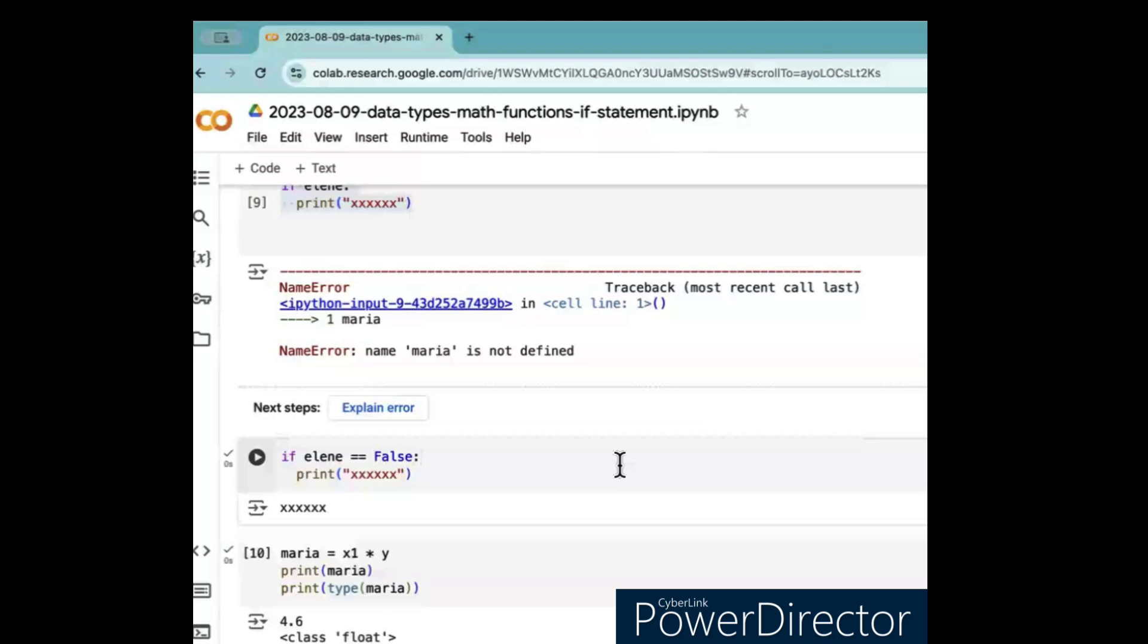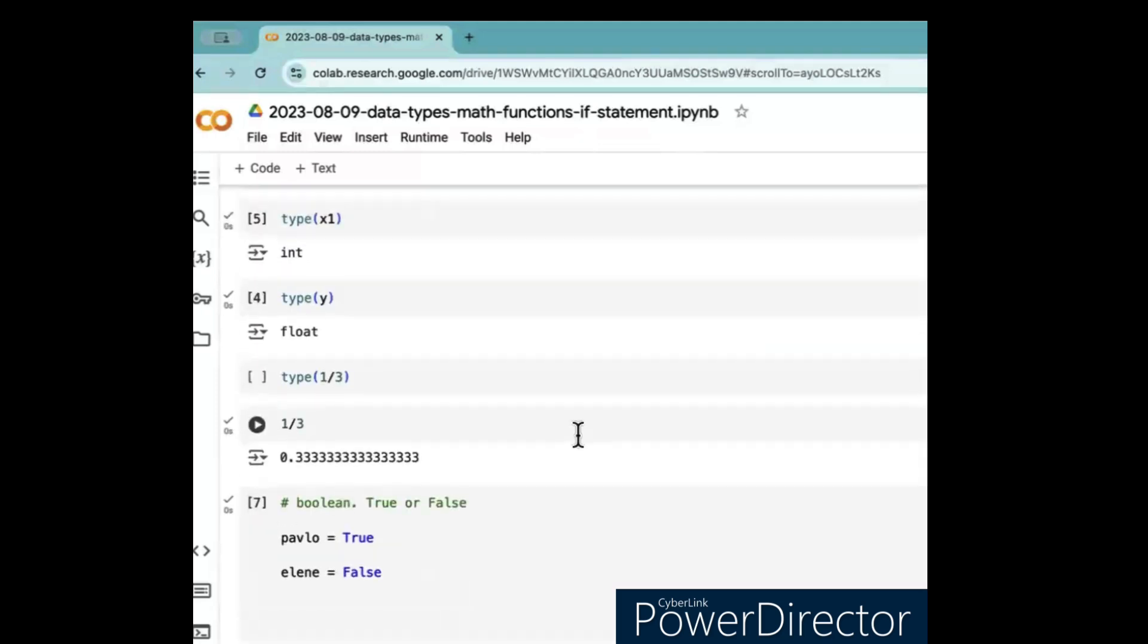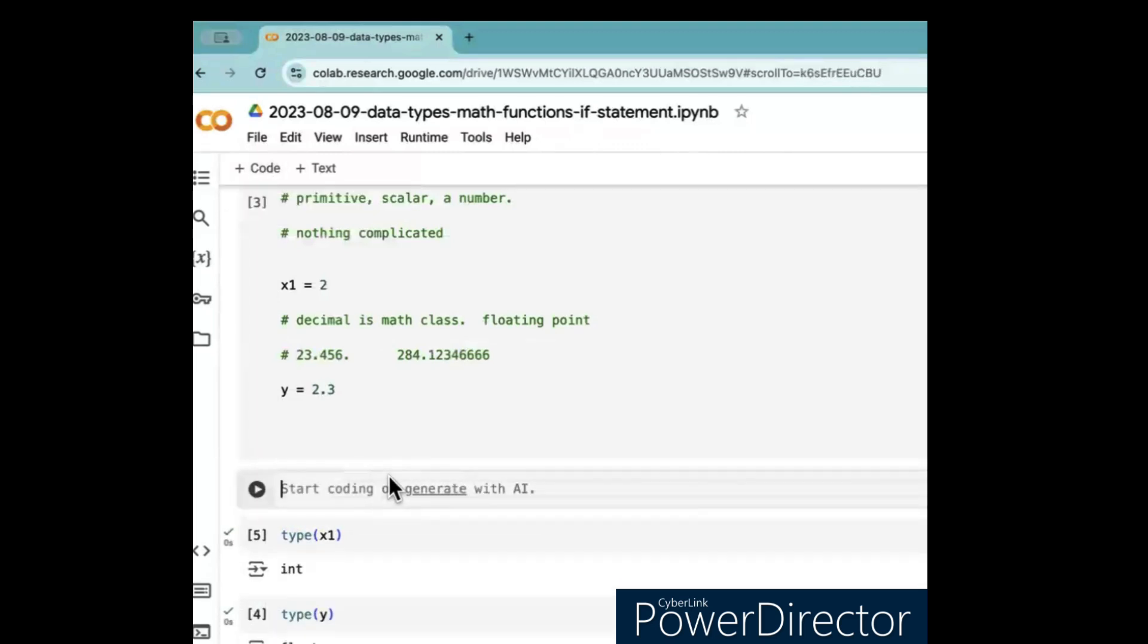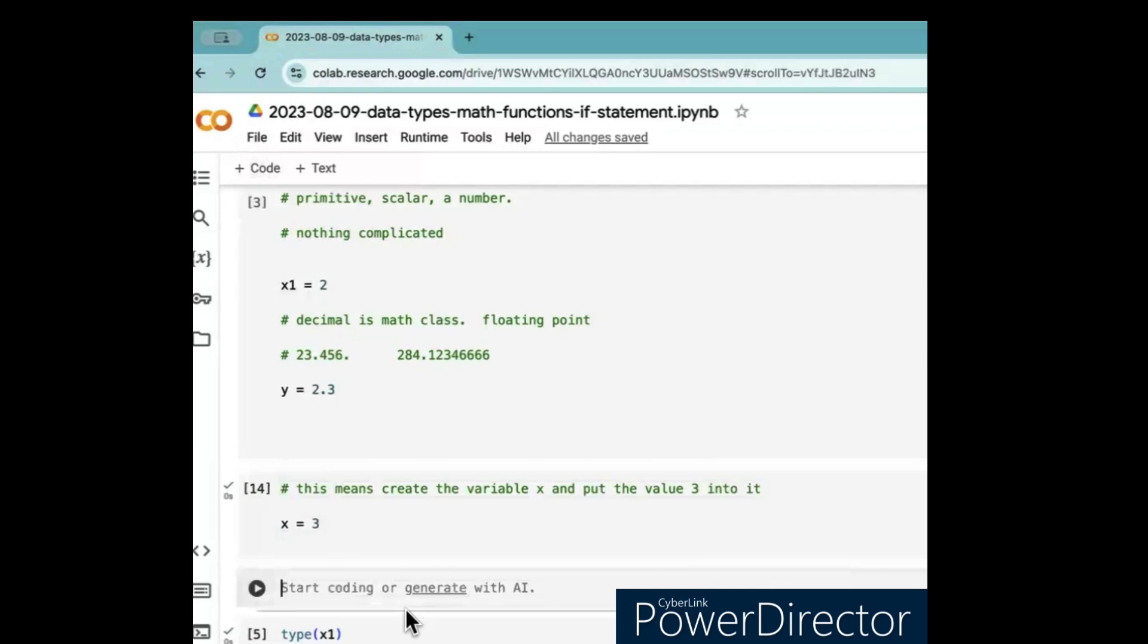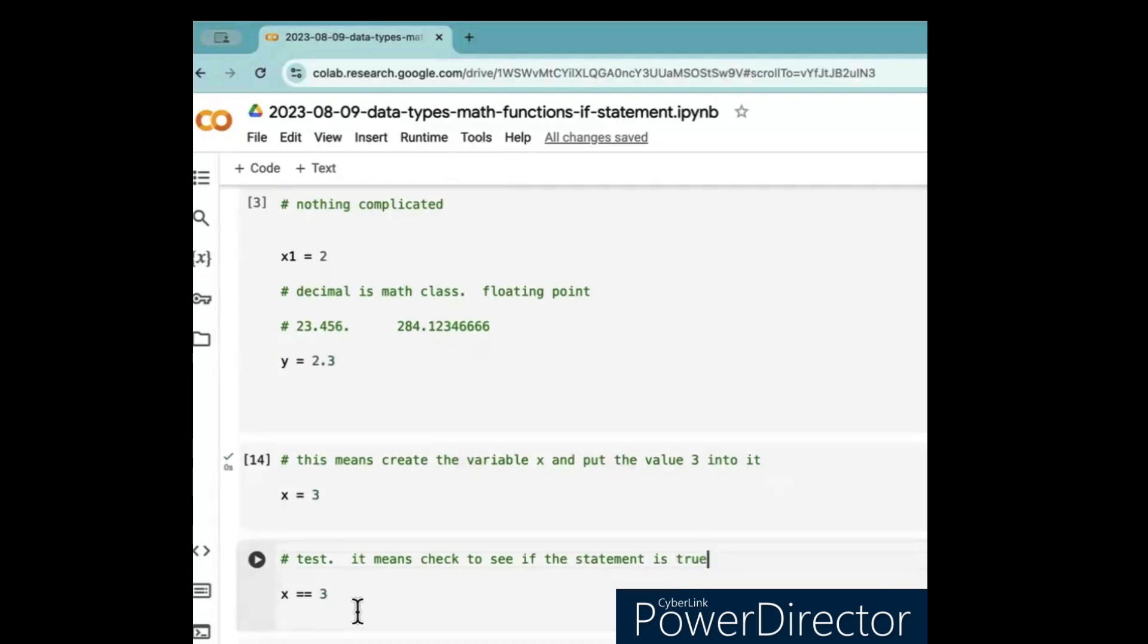See? Now, so let's go back up and explain what that means. See? Okay, up here, up here, I said x equals 3. Or, well, we use... Okay. So this means what? This means create the variable x and put the value 3 into it. Right? But if you do this, if you say x equal equal 3, that means test. That's test. It means check to see if the statement is true. Right?